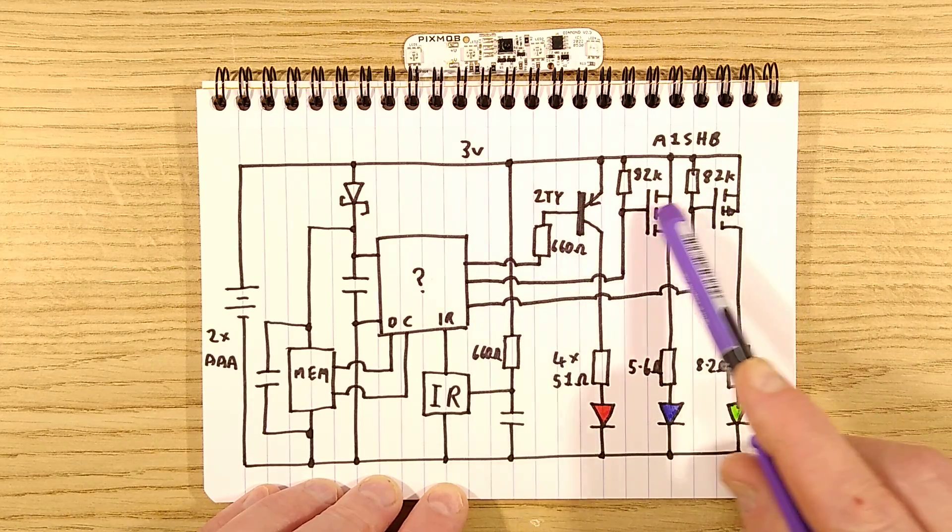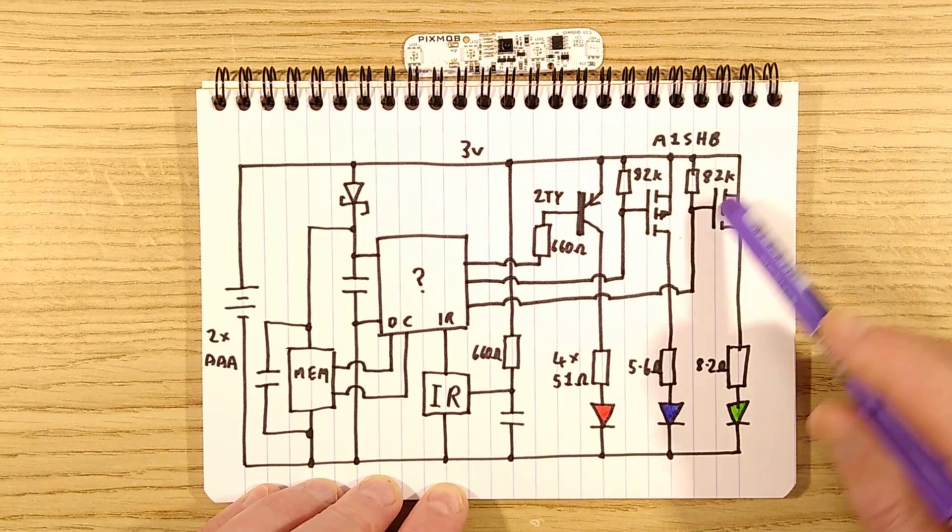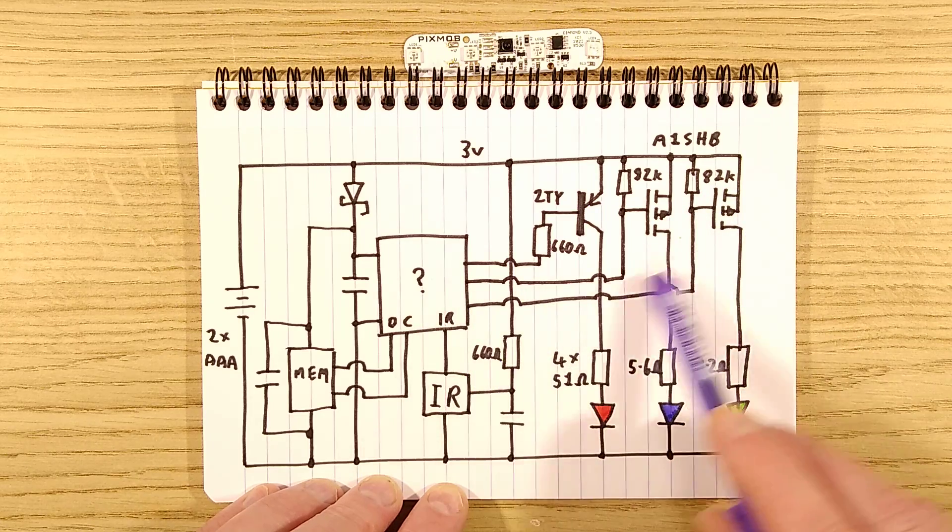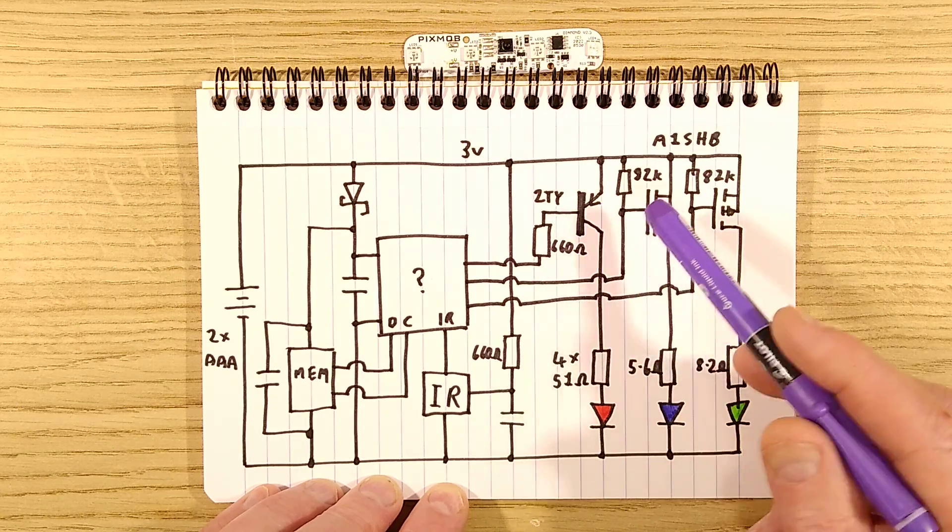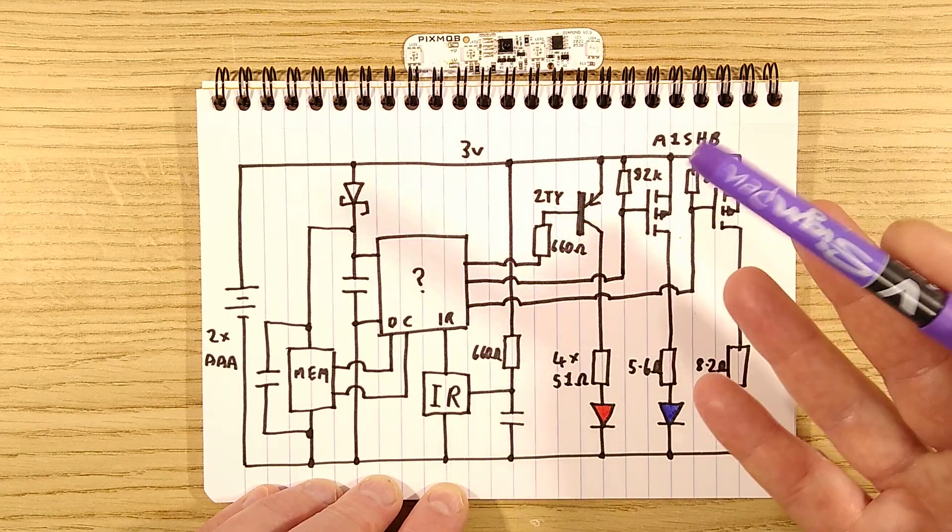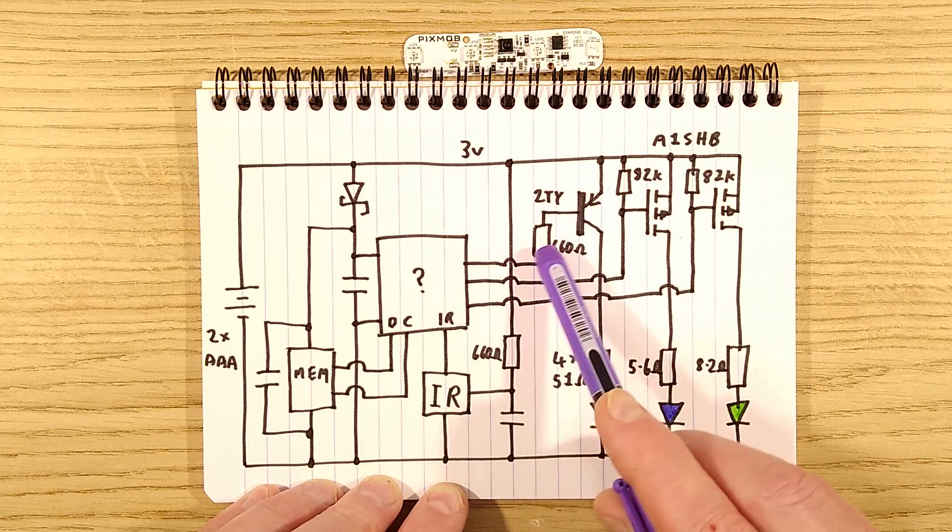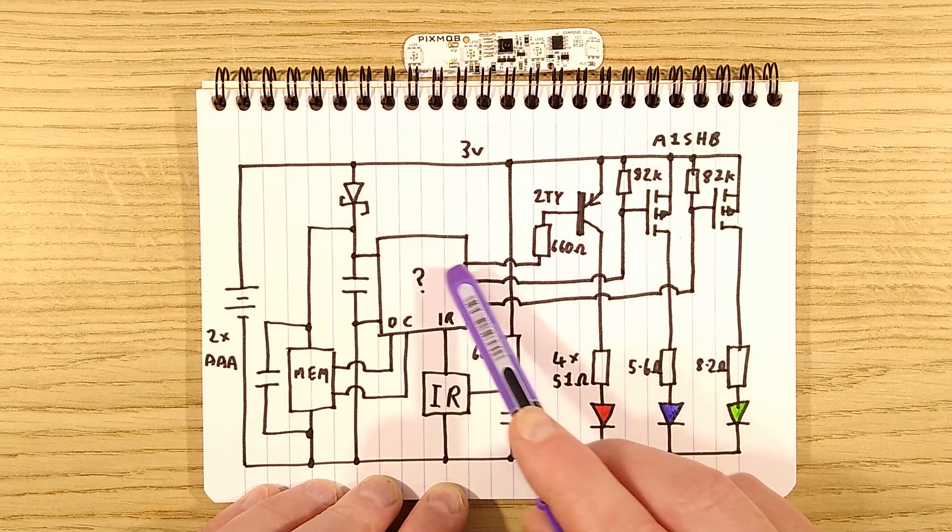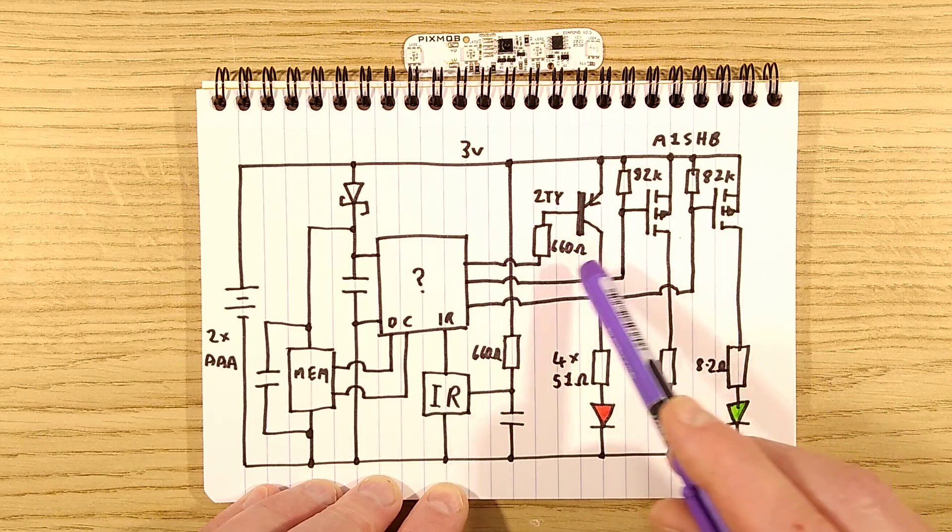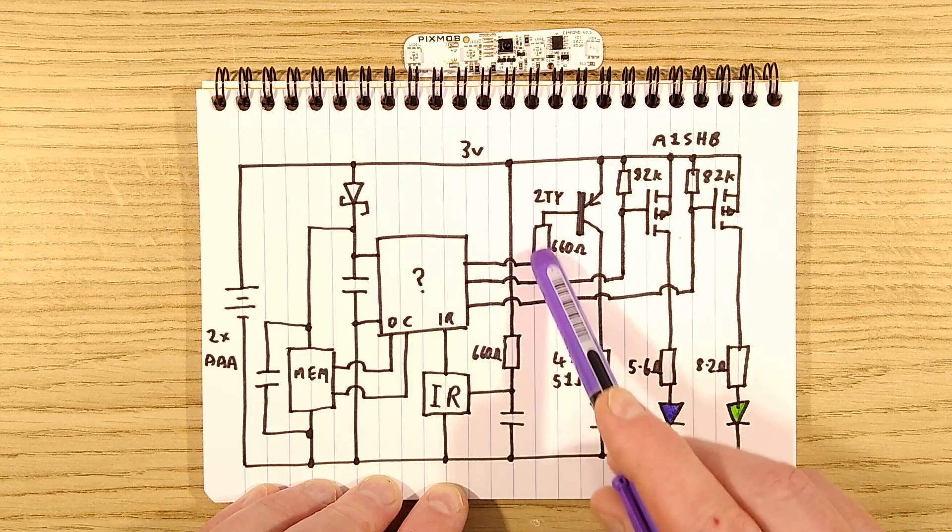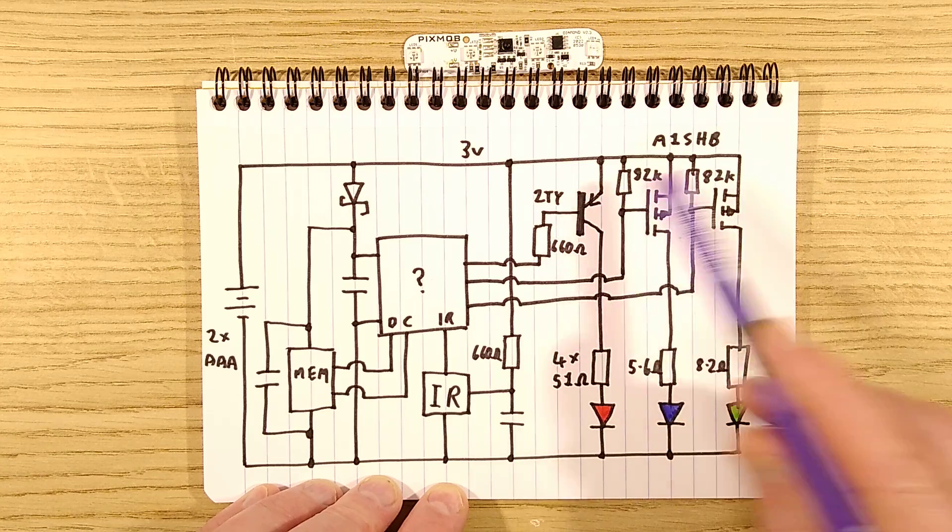In the case of the MOSFETs, they've got a really high value, 82K I measured in circuit, pull up resistor to keep them turned off, and then they're driven directly by the microcontroller. But for this transistor, the standard bipolar type transistors, they don't need so much effort to keep them off, it takes quite an effort to turn them on. In this case, it's this 660 ohm resistor, or nearest value to that, probably 680, but that's what I measured in circuit. And that limits the current from the microcontroller into the base to turn that transistor on.